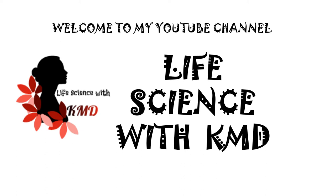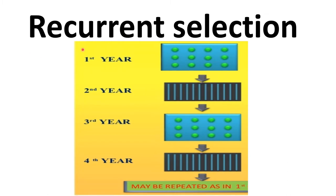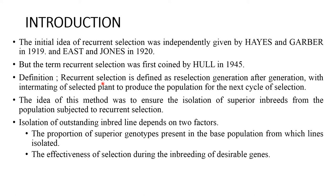Hello everyone, welcome to my YouTube channel Life Science with KMD. Today I am going to explain about recurrent selection. Recurrent selection is defined as reselection generation after generation with intermating of selected plants to produce the population for the next cycle of selection. The idea of this method was to ensure the isolation of superior inbreeds from the population subjected to recurrent selection.